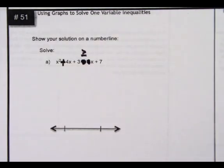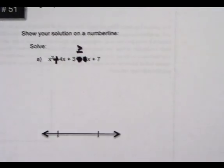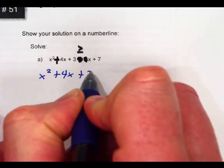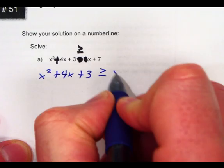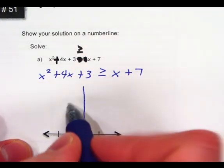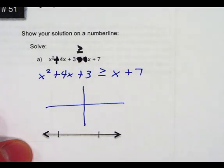So the correct equation that we're actually going to solve and figure out is x squared plus 4x plus 3 is greater than or equal to x plus 7. Alright, with that being said, we're going to need to graph this. So our first move is going to be to graph it like this.